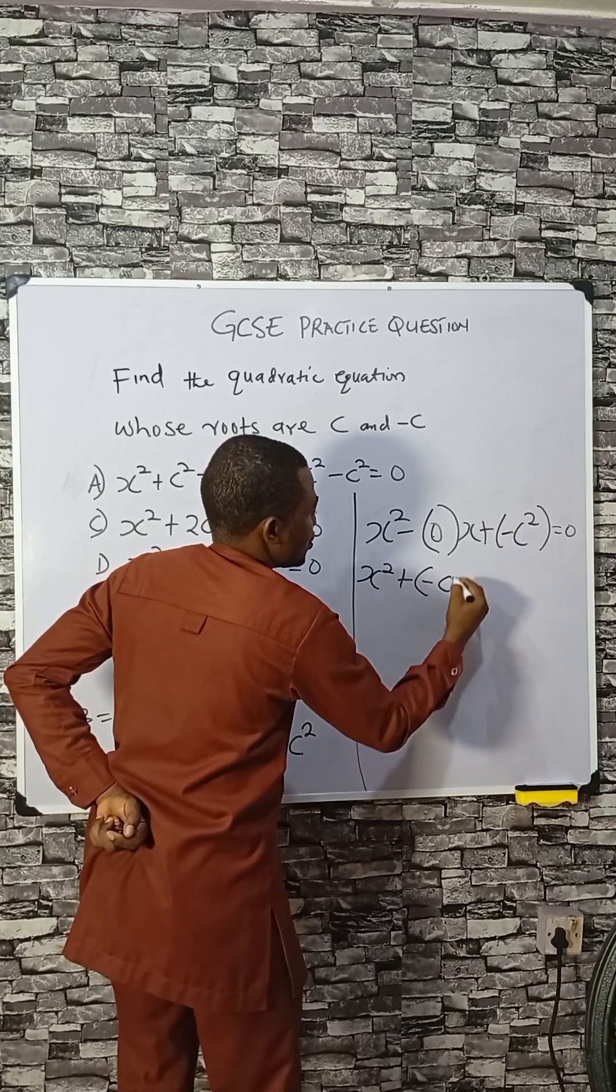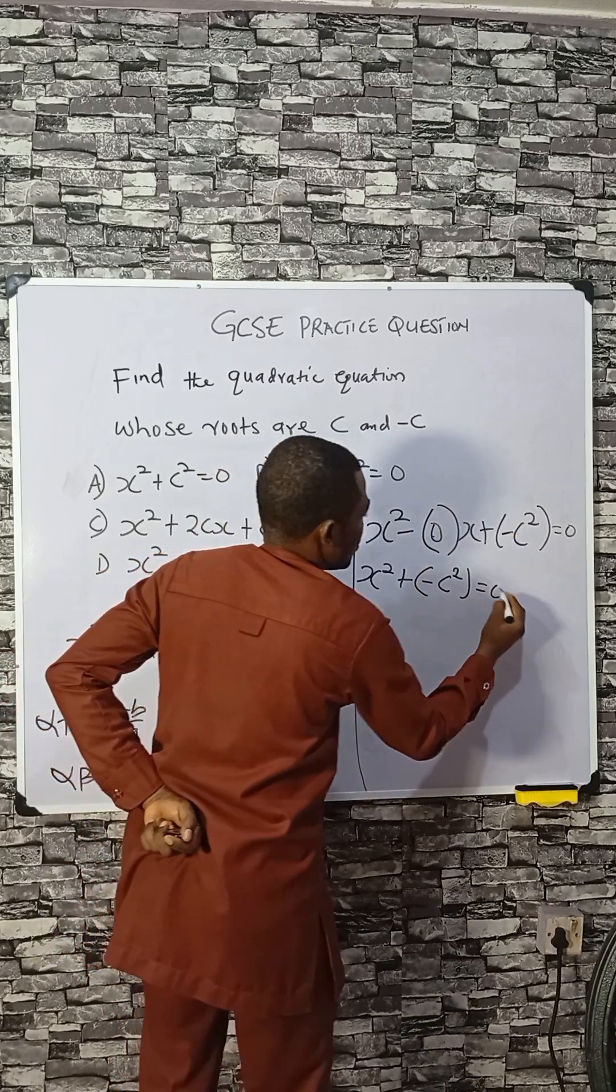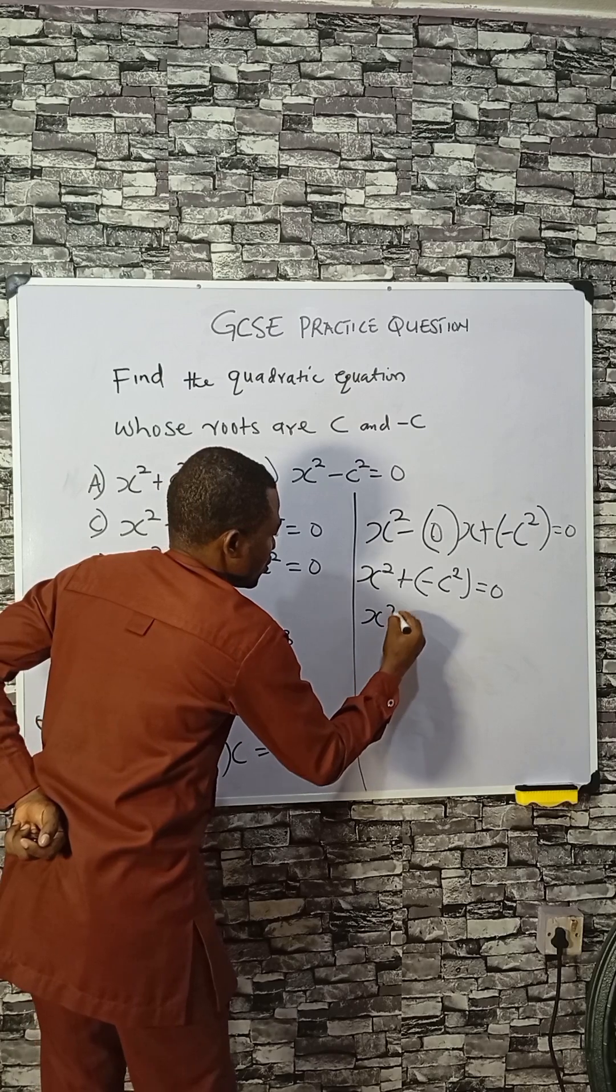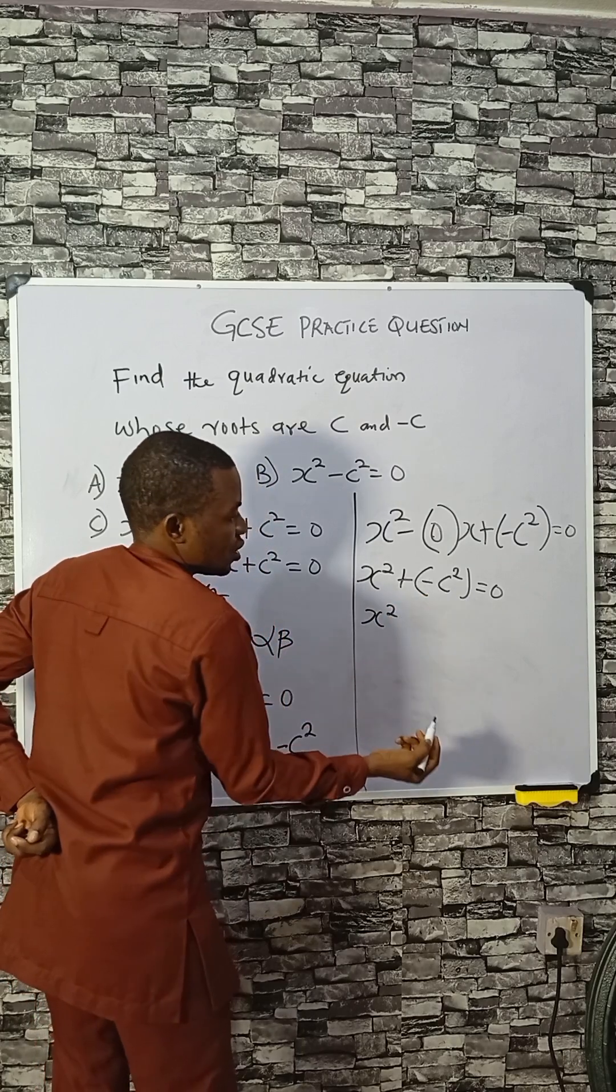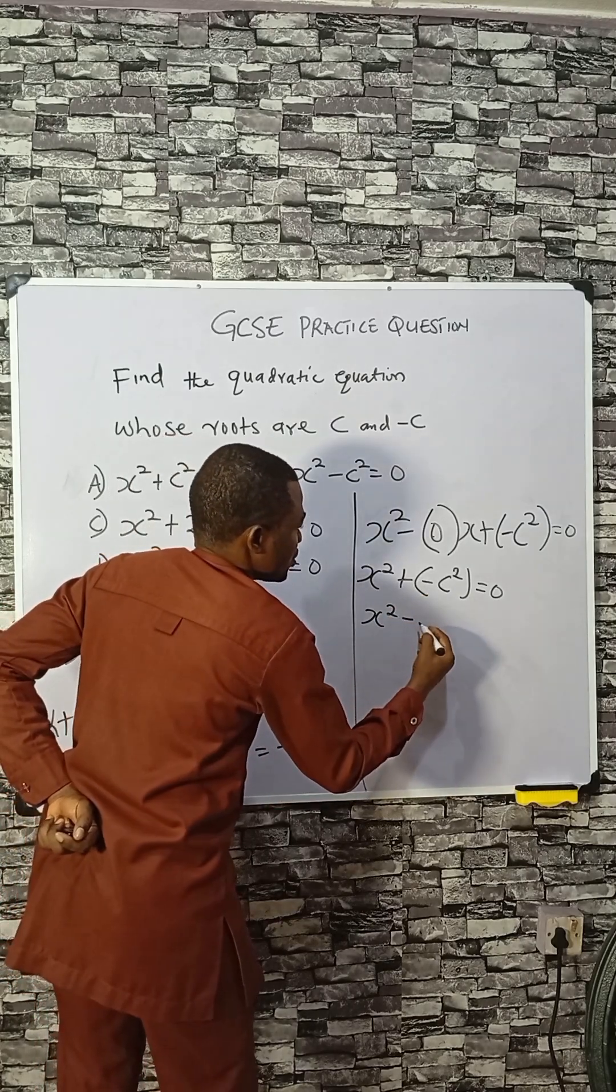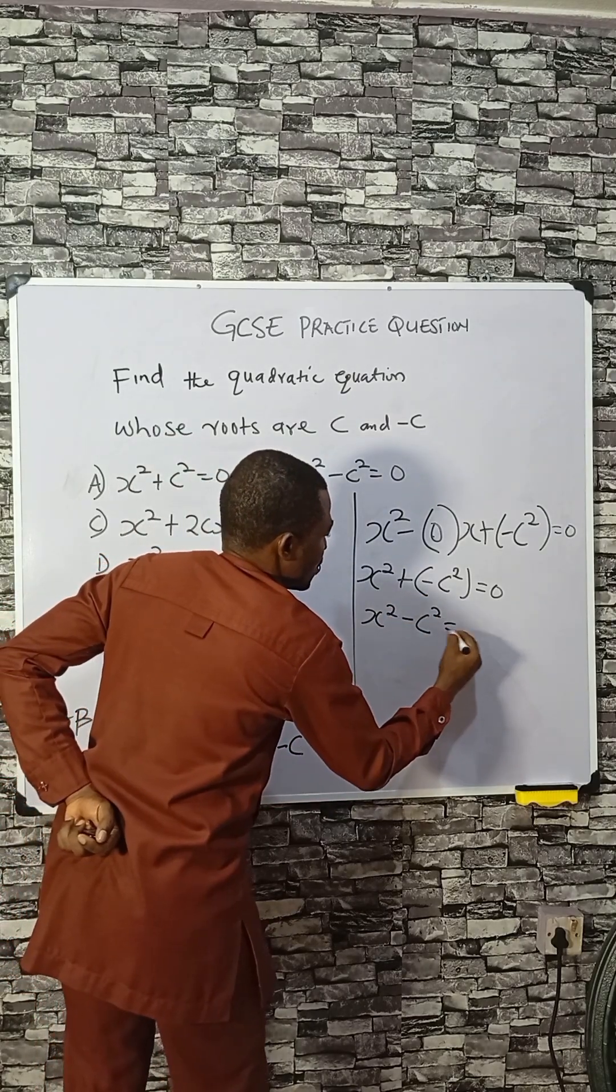minus c squared equals zero. Now x squared plus the minus here will give you minus c squared equals zero.